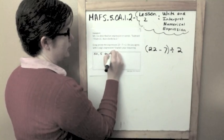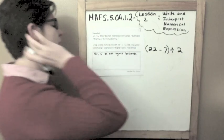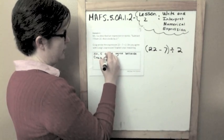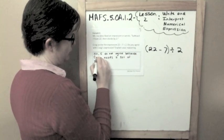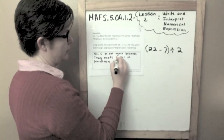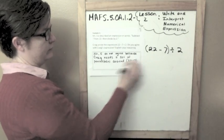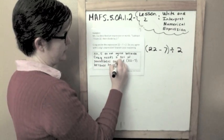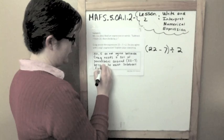I do not agree because my whole answer has to fit inside this box. I do not agree because Craig needs a set of parentheses around 22 minus 7 because he must subtract first.